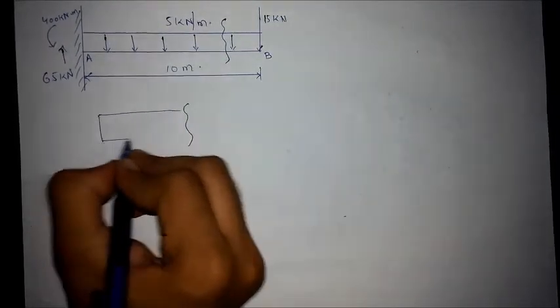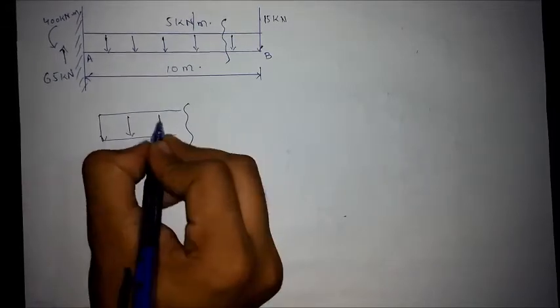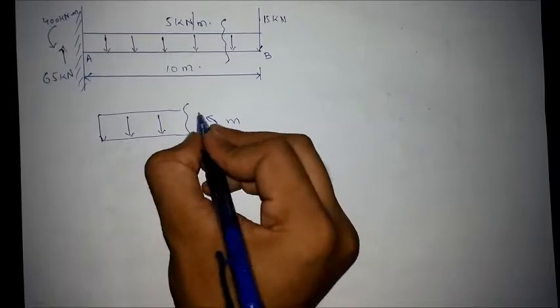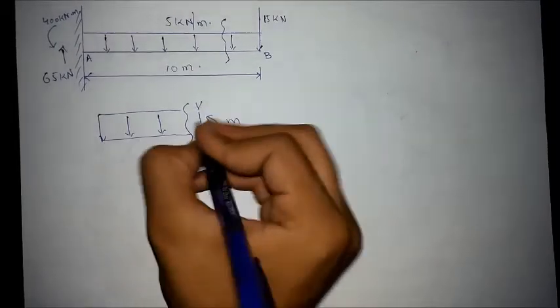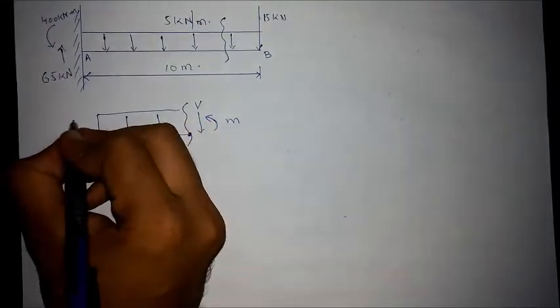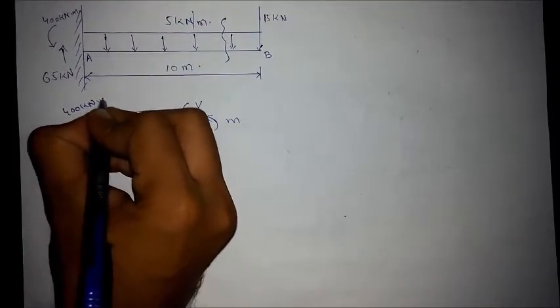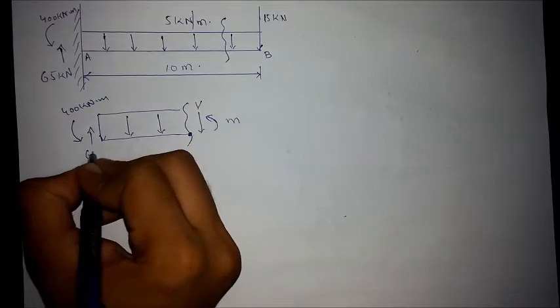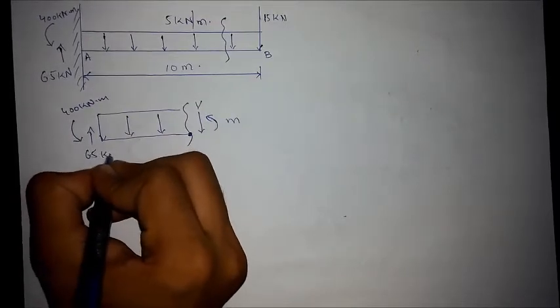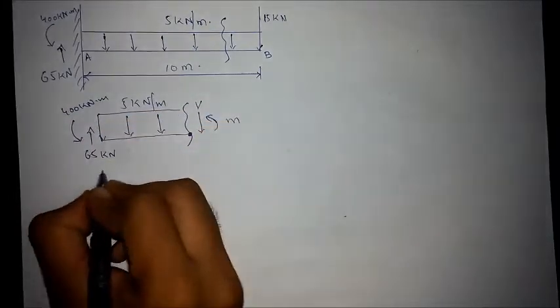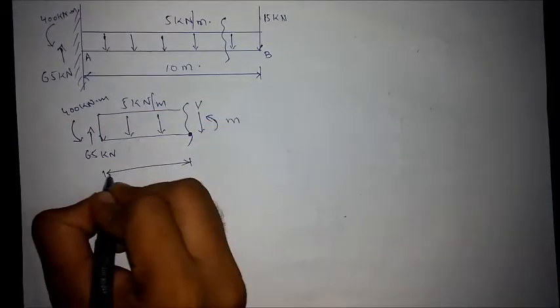We always assume these signs. There's a 400 kilonewton meter moment. Let's say this distance is x.